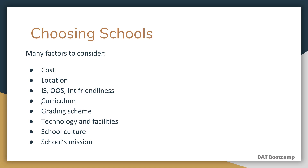Also consider the curriculum — is it a medical school curriculum? Is it integrated? Is there anything unique about it? You can find this by Googling the school and typing 'curriculum.' Also look at the grading scheme: is it honors/pass-fail, pass-fail, or a hybrid? This will matter more for applicants seriously considering specializing in the future, as schools using pass-fail grading tend to produce more specialists by allowing students to focus on research and community involvement.